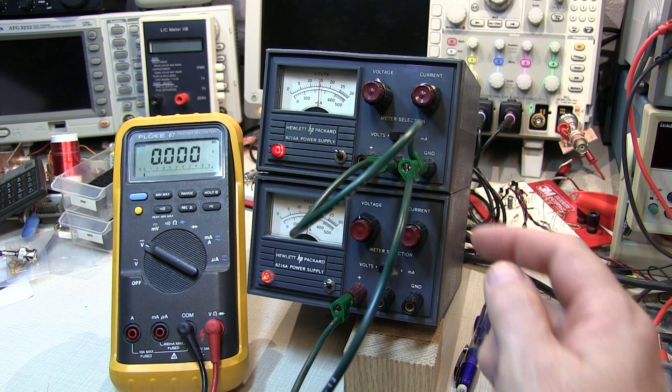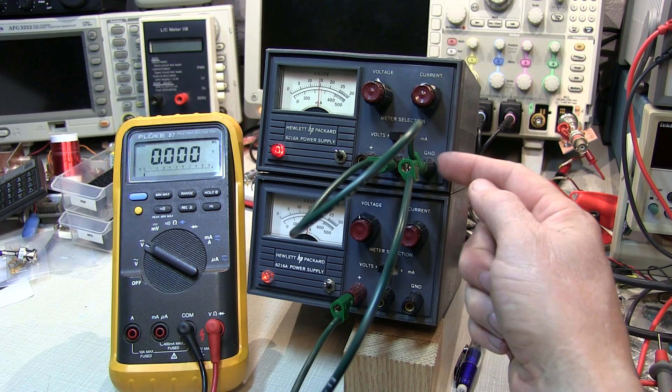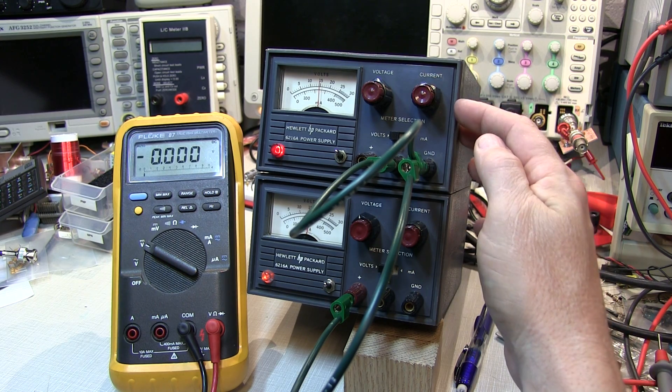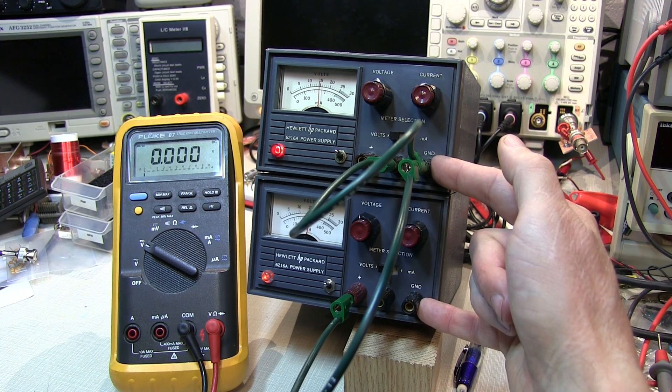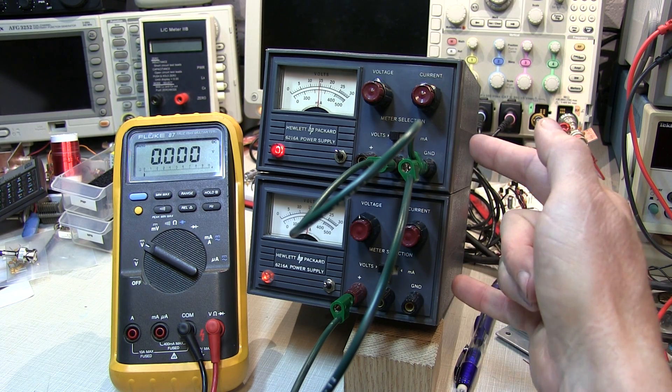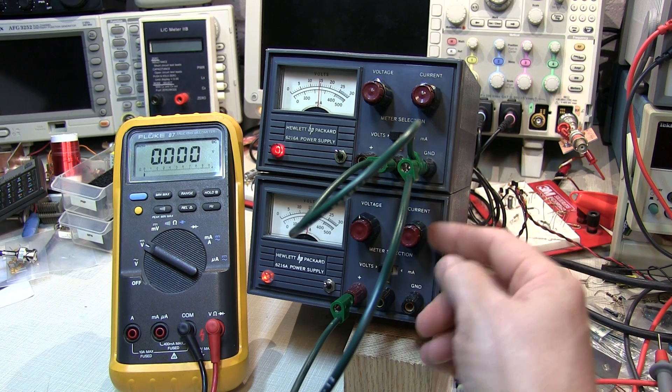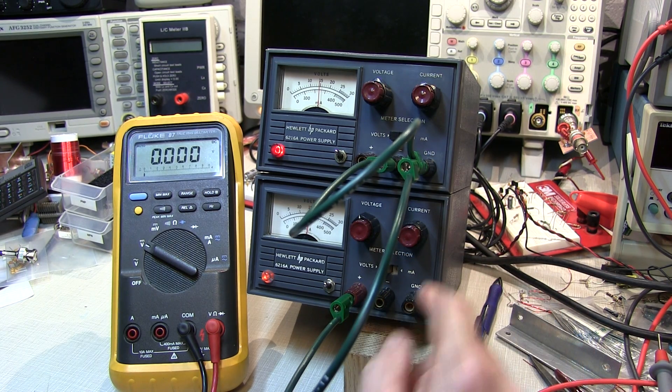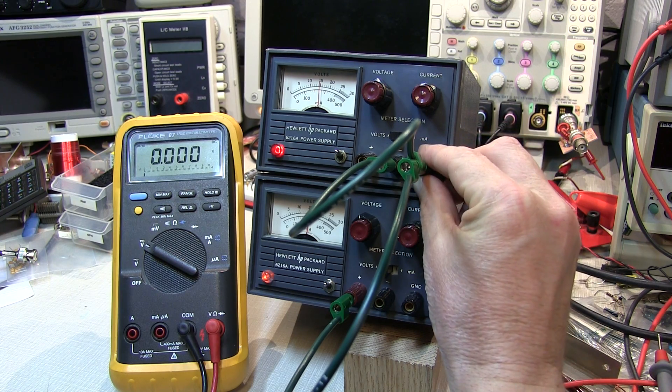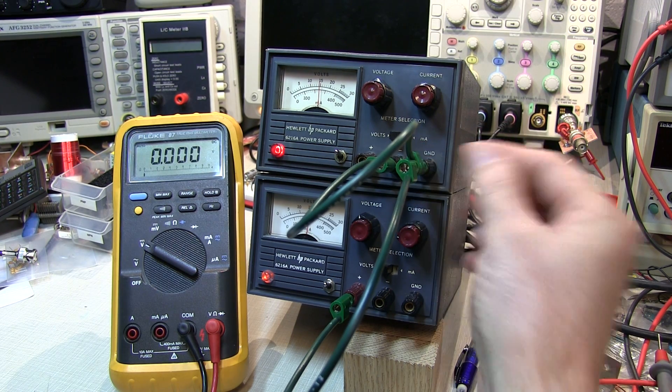Now one thing to note is that even though we haven't made a connection between the ground terminal of this power supply and the ground terminal of this one, they are electrically connected because they're typically connected to the ground through the mains. So I really could have gotten away with simply putting this connection to the ground terminal here, but I like ensuring that everything is tied to a common point. So I've connected it up this way.